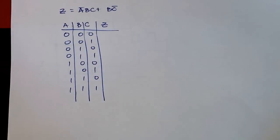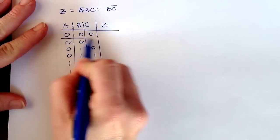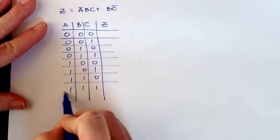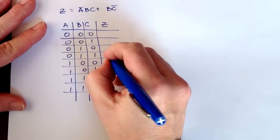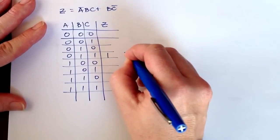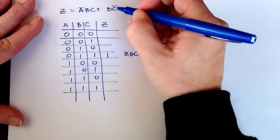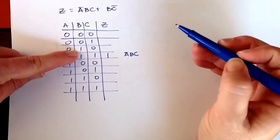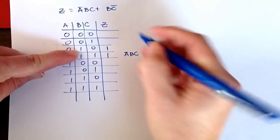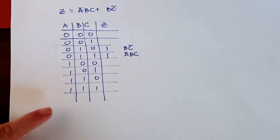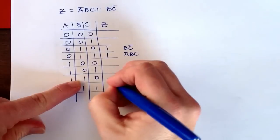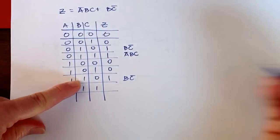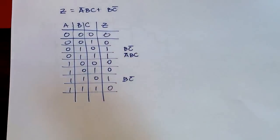I need to put a one everywhere these conditions are met. NOT A AND B AND C — that's this line — so I put a one there. Then I'm looking for B AND NOT C. There's no A term, so I don't care what A is. B equals 1 and C equals 0 gives these two lines — so I put a one in both. That gives us our truth table for Z.